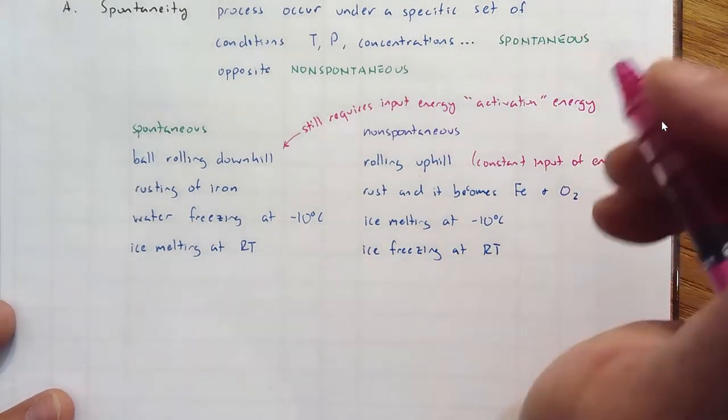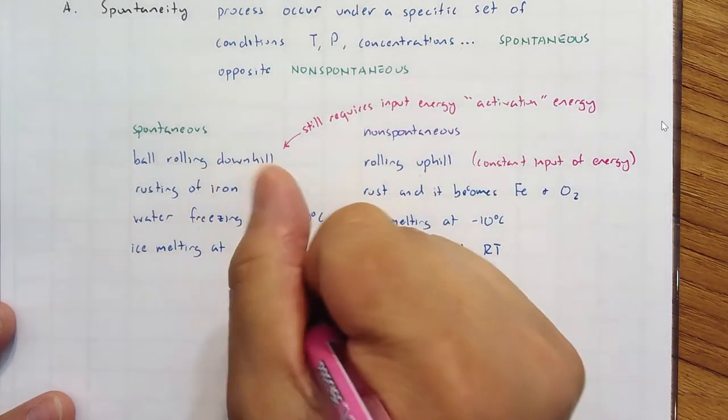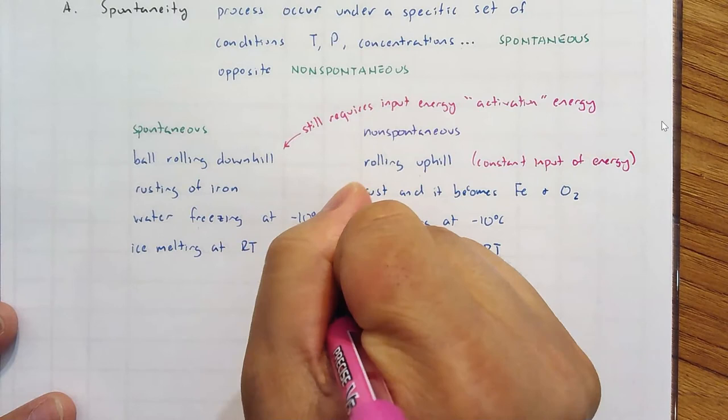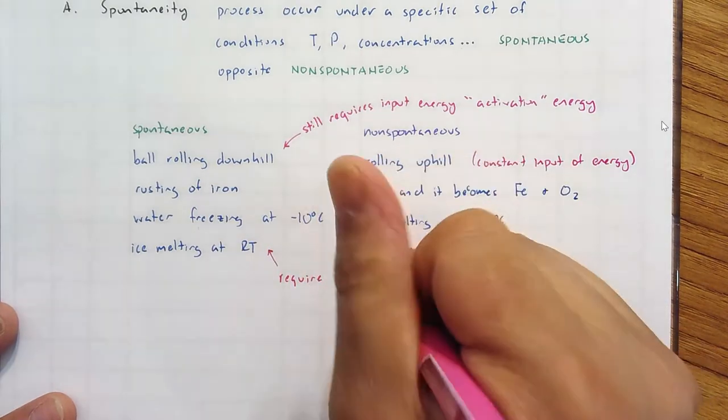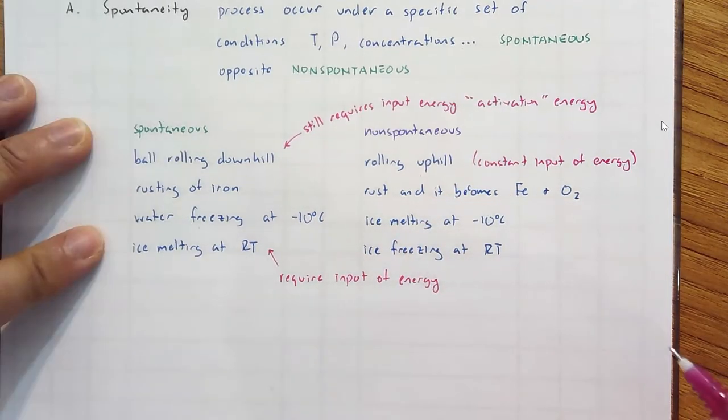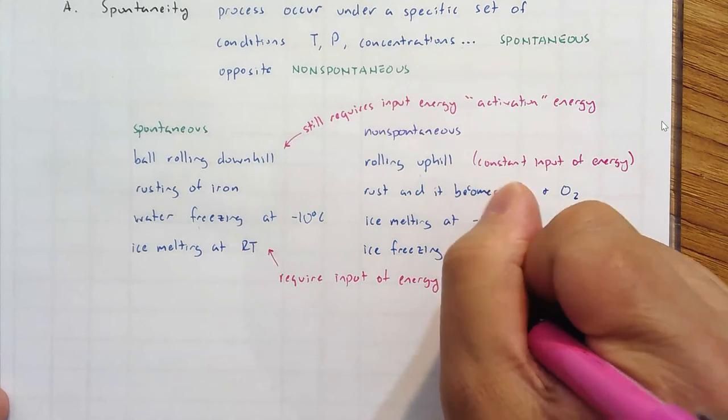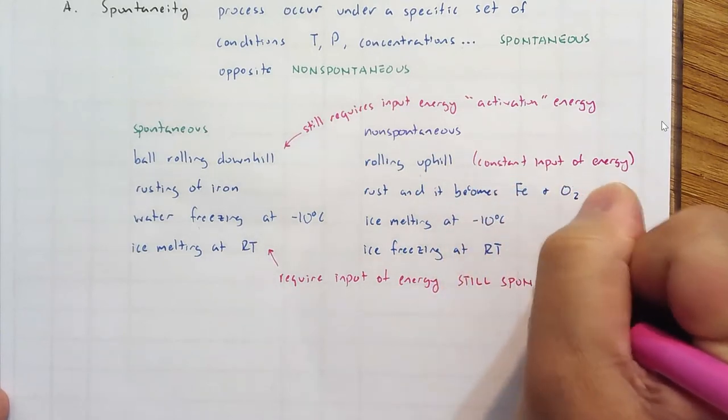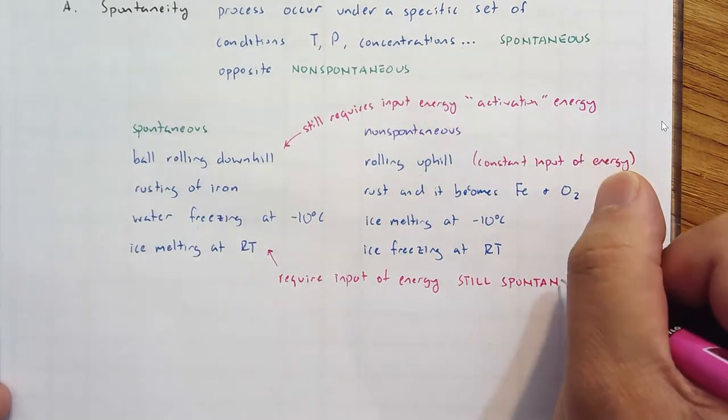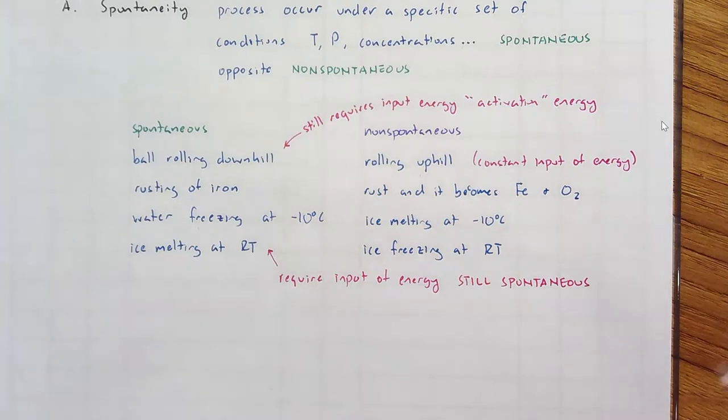This one is interesting because when ice melts, you are still inputting energy. It still requires an input of energy, but it's still spontaneous. Spontaneous is not whether it requires energy or not. There's another thermodynamic parameter that helps determine spontaneity.